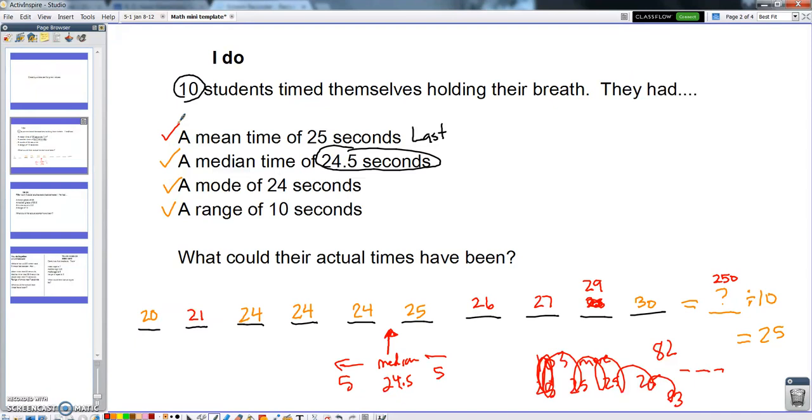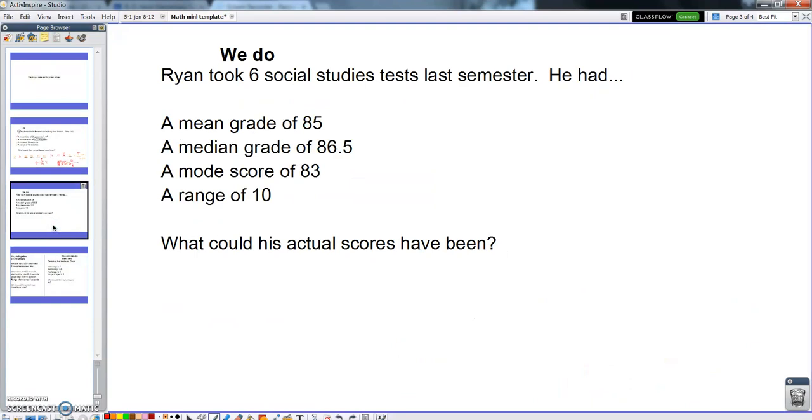It's like a puzzle, right? Pretty tricky, but it's a puzzle. It's harder when you have something like 10 numbers. I'm going to make the future ones only have like six. But I just wanted you to see how I did it. So it's tricky. Do the mean last. The mean's the hardest one. And the first three are pretty easy. Open up your notebook. Let's try one together. Ryan took six social studies tests last semester. He had a mean grade of 85, median grade of 86.5, mode grade of 83, and a range of 10. What could the scores have been? So we know he took six tests.